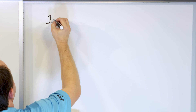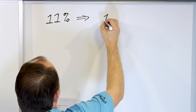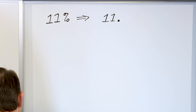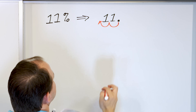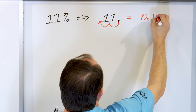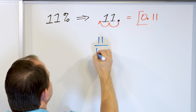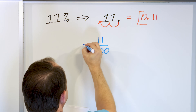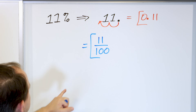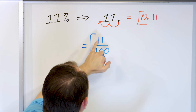Let's convert 11%. To get the decimal, write 11 with a decimal at the end, divide by 100 by moving it two spots to the left: 0.11. That's the decimal equivalent of 11%. To convert to a fraction, write it as 11 over 100. I can't simplify this any further, so the fraction equivalent is simply 11/100. You can see why the decimal moves two spots to the left — because we're always dividing by 100.